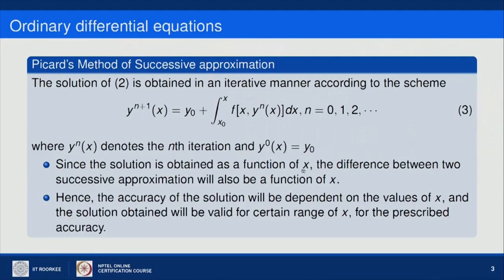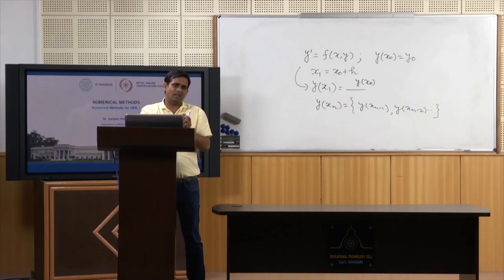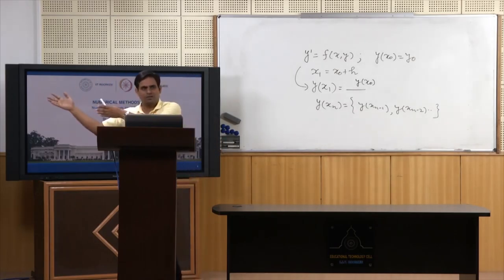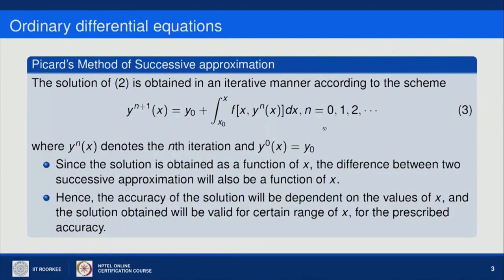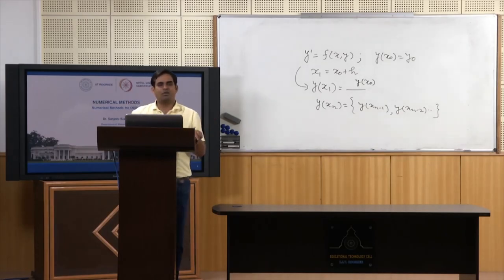Since the solution is obtained as a function of x, the difference between two successive approximations will also be a function of x. Hence the accuracy of the solution depends on the value of x, and the solution is valid only for a certain range of x. If you want accuracy up to order delta, it will be valid for a particular domain, and may not be valid for some other domain at that accuracy. This equation is called Picard's iteration formula, and as noted, it is not a purely numerical method — it is semi-analytical or an approximate analytical method.